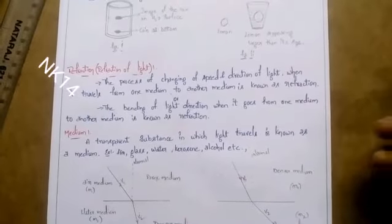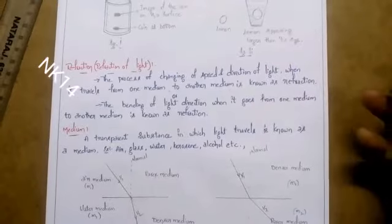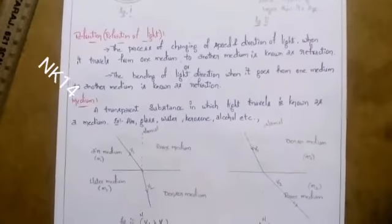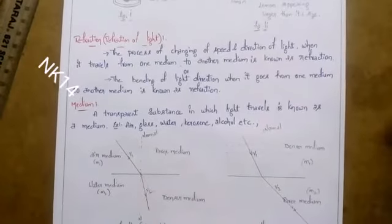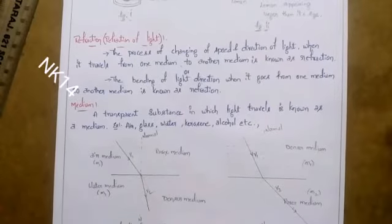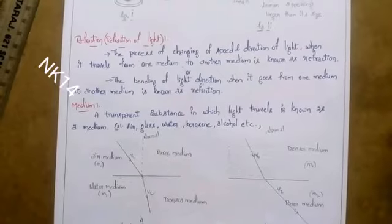Refraction is the property of light where the speed and the direction of the light changes when it transfers from one medium to another medium. A medium is a transparent substance where the light travels.